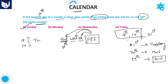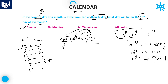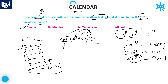Both the seventh and fourteenth are Tuesdays. From the fourteenth, count forward: fifteen is Wednesday, sixteen is Thursday, seventeen is Friday, eighteen is Saturday, and nineteen is Sunday. You can also go up to the twenty-first day and count backward to the nineteenth. Both methods give the same result — the answer is Sunday.